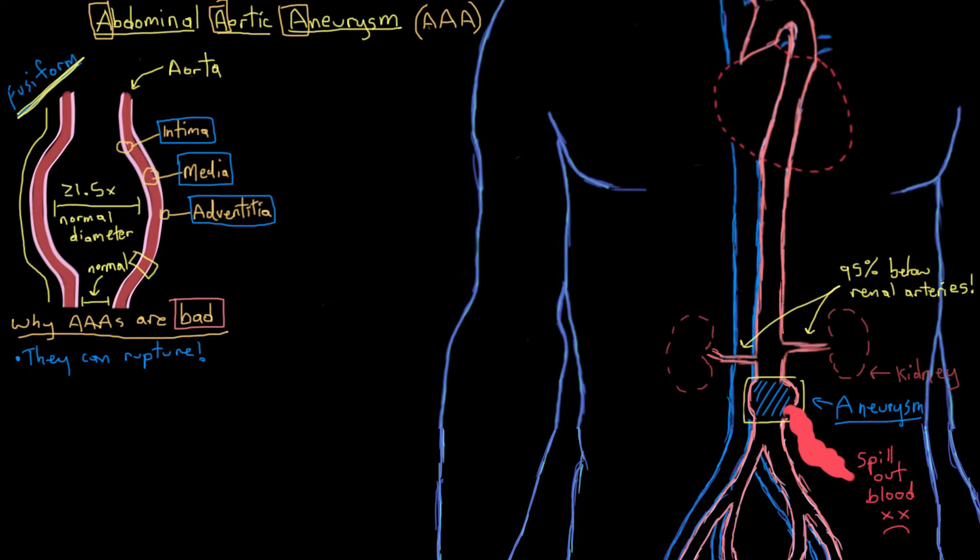Rupture is really the biggest worry about abdominal aortic aneurysms. I'm going to say AAA from now on because abdominal aortic aneurysm is a long phrase. I'll outline a few other complications of aneurysms in a minute, but it's really the rupture and outpouring of blood into the abdominal cavity that we worry about the most with AAAs.